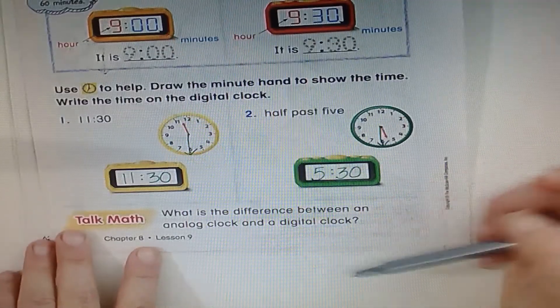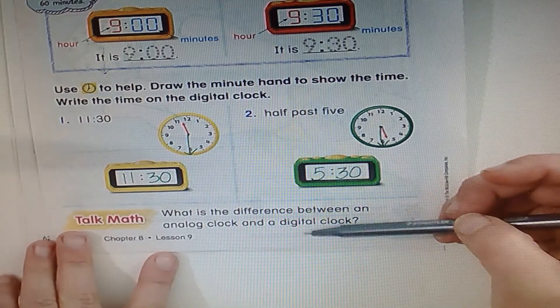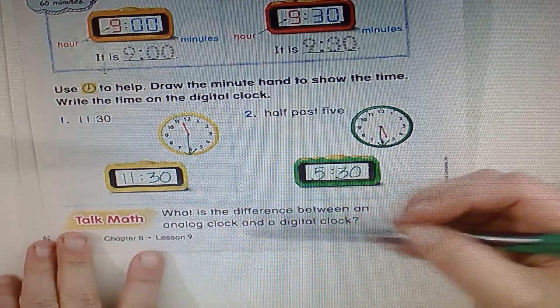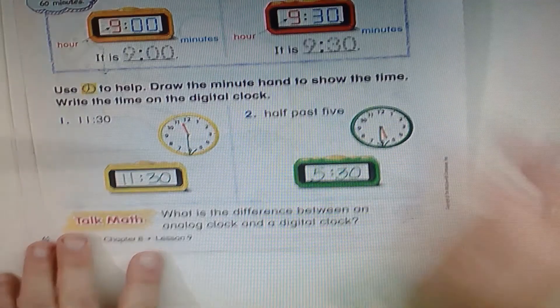Now remember the difference between an analog clock and a digital clock. Digital has numbers like digits and analog has a face. Turn your paper again.